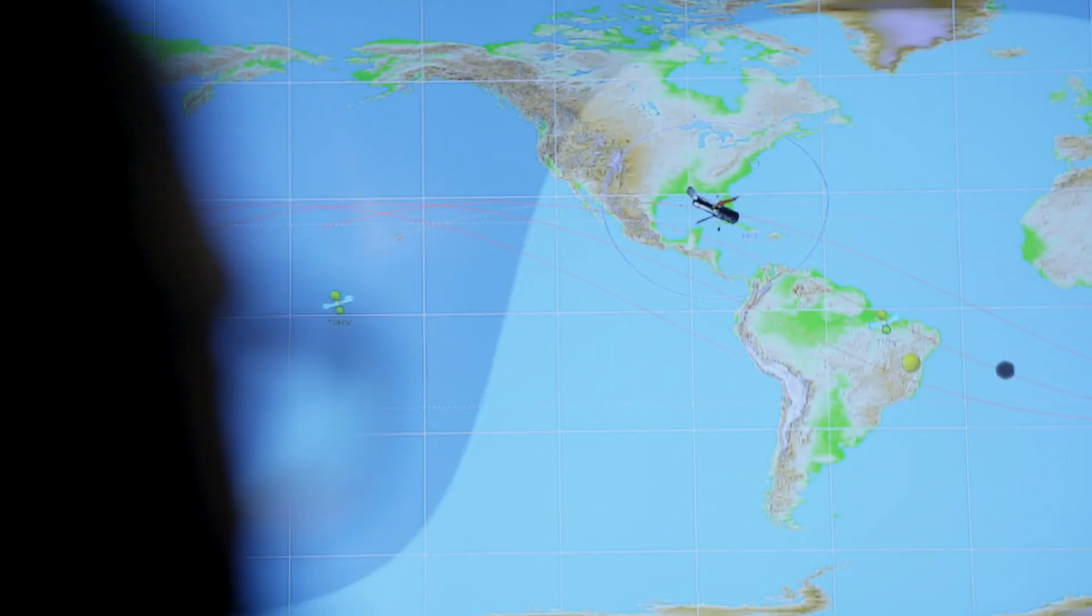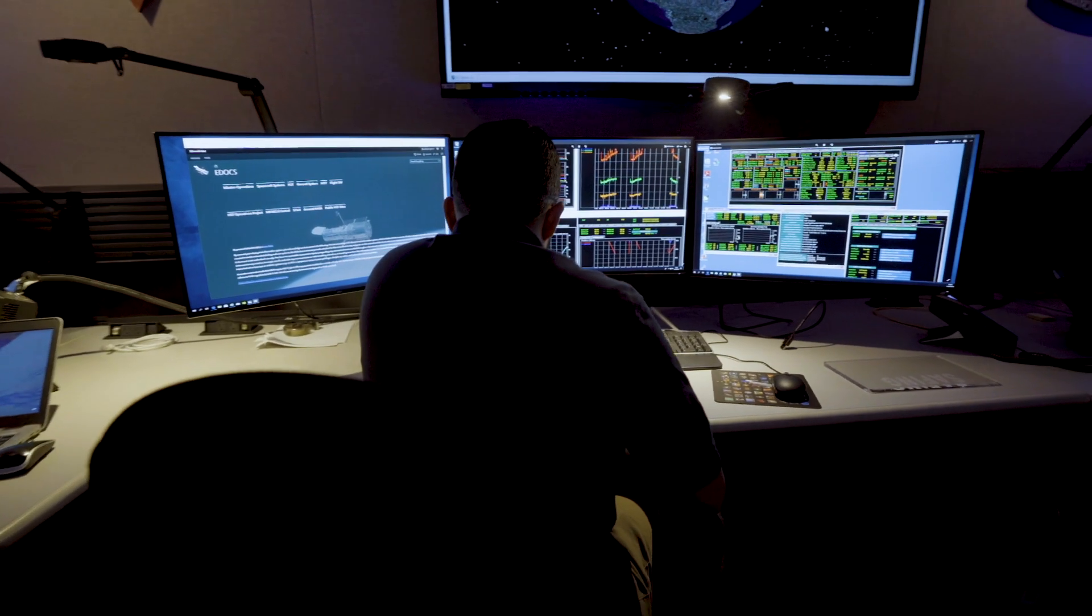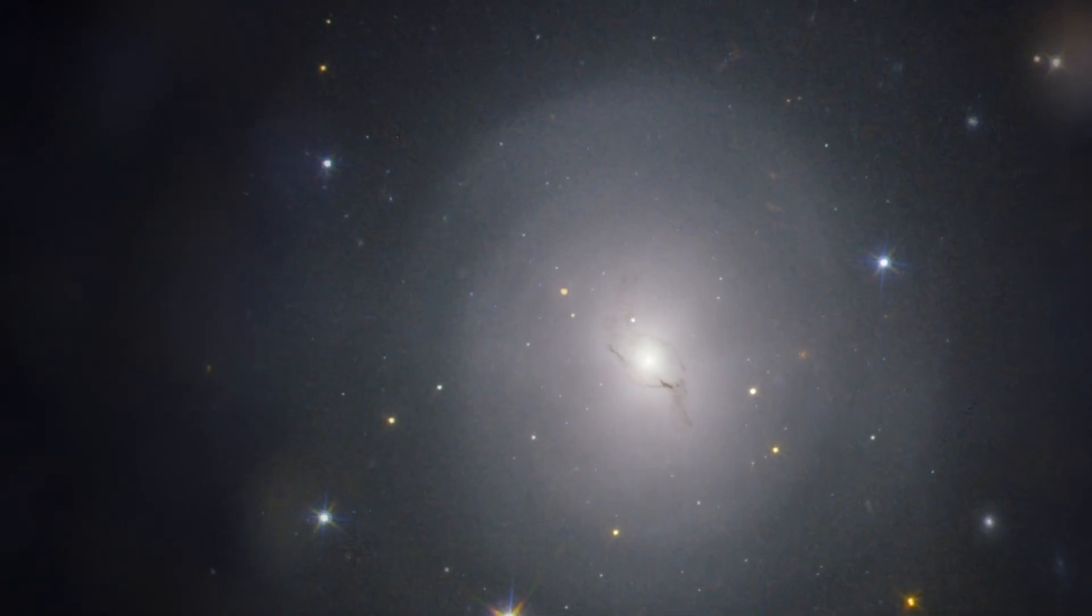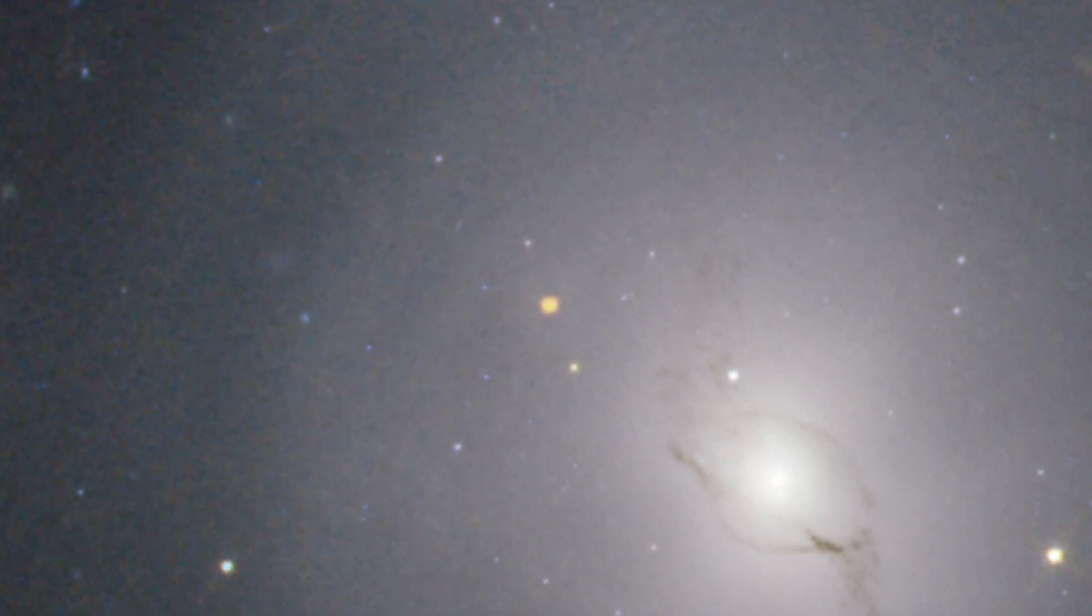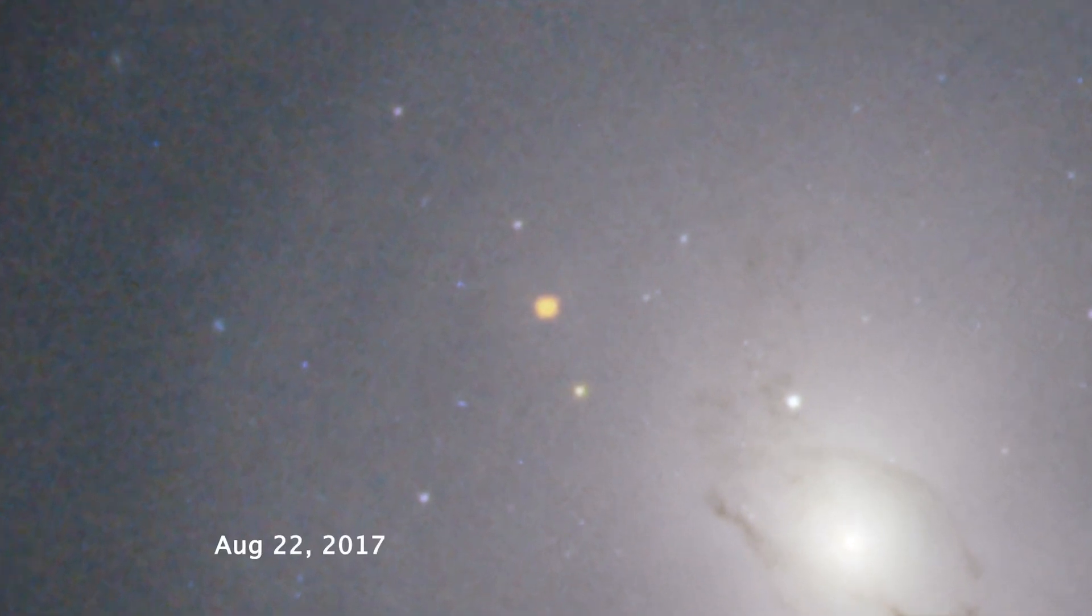When we knew there was a gravitational wave event, and we pointed Hubble in the direction of that event, we pointed it at that galaxy. We saw a beautiful picture of this explosive smudge in that galaxy, which was basically the pulse of light that came from that kilonova.